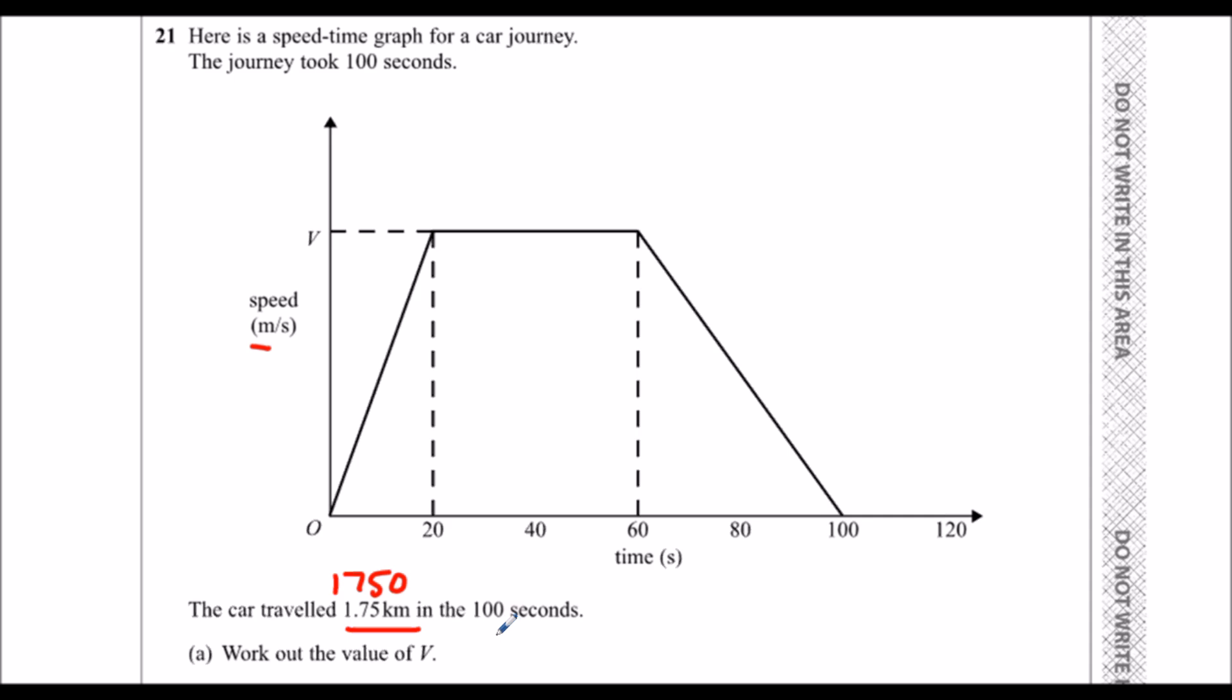So what we need to know about speed-time graphs: we need to know the area underneath the graph is the distance traveled, and we need to know that the gradient is the acceleration. So work out the value of v. The area underneath equals 1750.